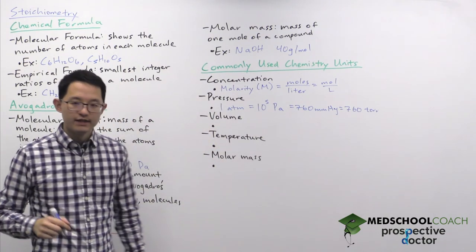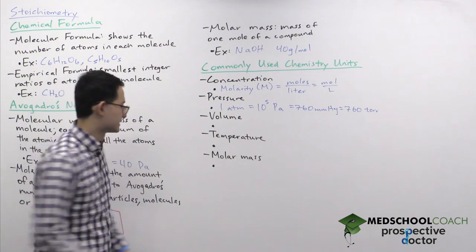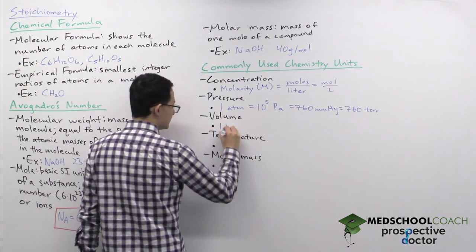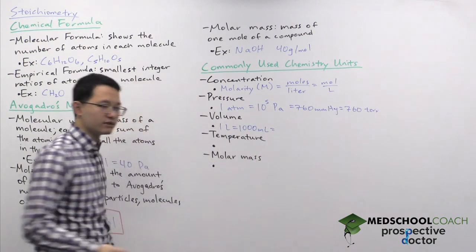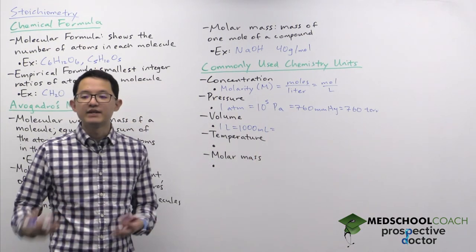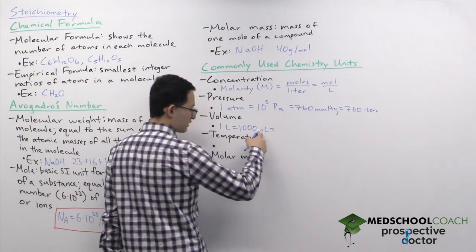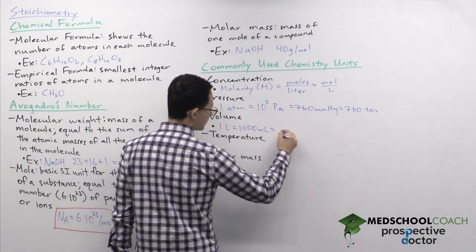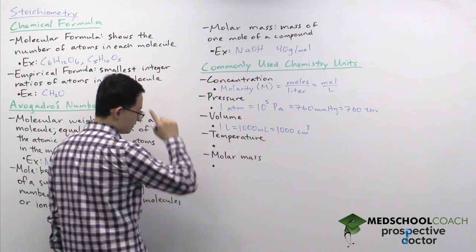For volume, the unit that we often use is milliliters or liters. So one liter is equal to 1,000 milliliters. And another unit we'll occasionally use is centimeters cubed. So a centimeter cubed, or a cc, is equivalent to a milliliter. So 1,000 milliliters is also 1,000 centimeters cubed.